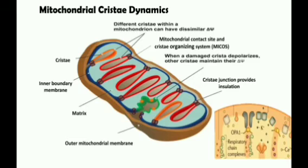Cristae biogenesis can be intrinsically caused by spontaneous forces generated by lipid- and protein-driven membrane curvature. The outer mitochondrial membrane likely serves as a border to limit the extension of the cristae structure. A key multiprotein complex regulating cristae biogenesis is the mitochondrial contact sites and cristae organizing system (MICOS). ATP synthase dimers have been proposed as crucial drivers of cristae morphology because their formation can bend the lipid bilayer. Another key regulator of cristae architecture is OPA1, which is important for cristae junction formation and maintenance.